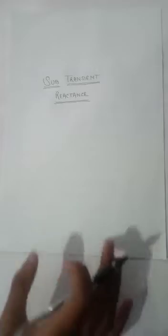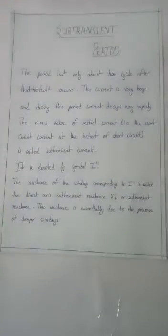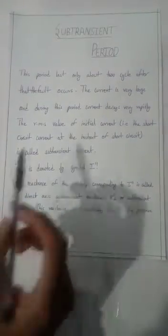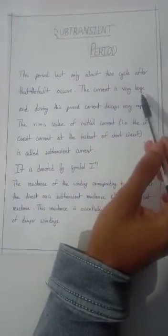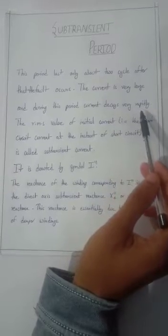Firstly, we have to start with Subtransient period. The period lasts only about two cycles after that the fault occurs. The current is very large and during this period the current decays very rapidly.